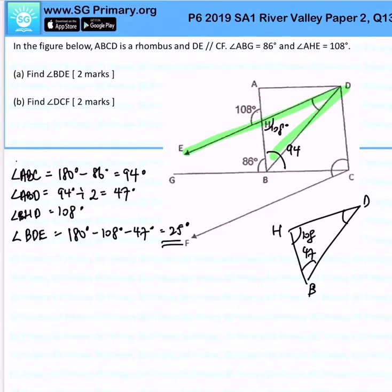That's for part A. Now for part B, angle DCF. How do we get DCF?